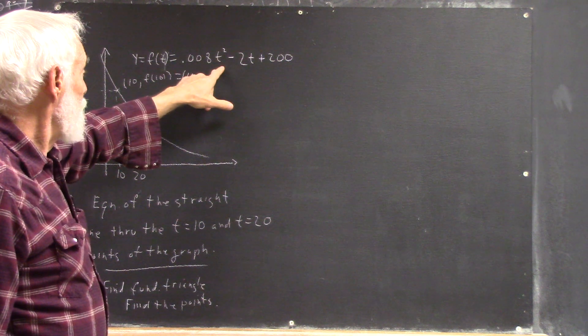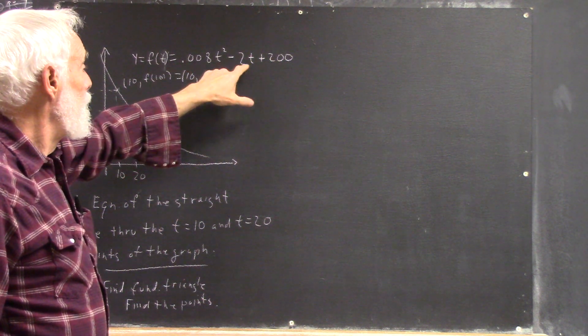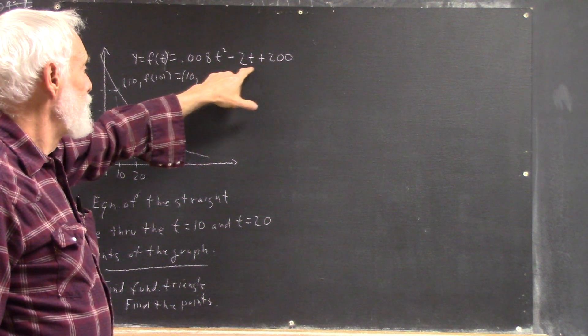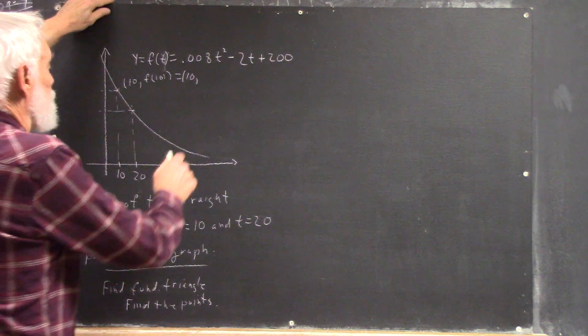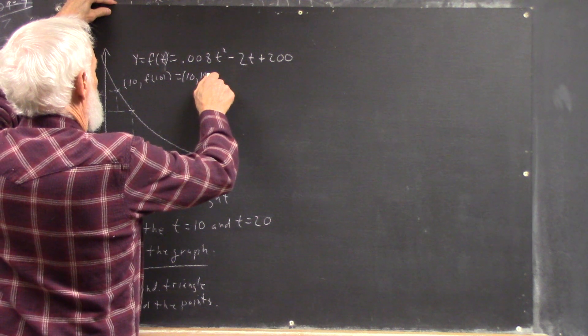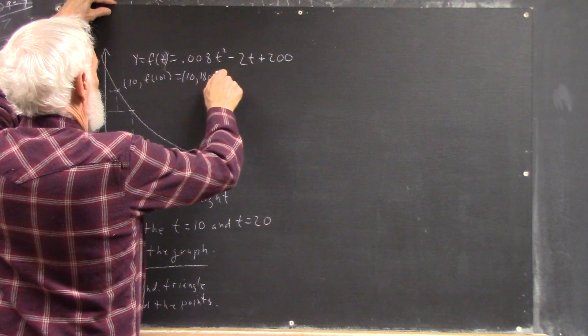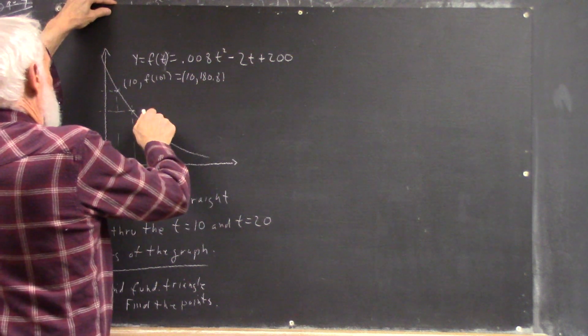T is 10. Well, we've got 100 here. So we've got 0.8 minus 20 plus 200. I think that gives us 180.8.